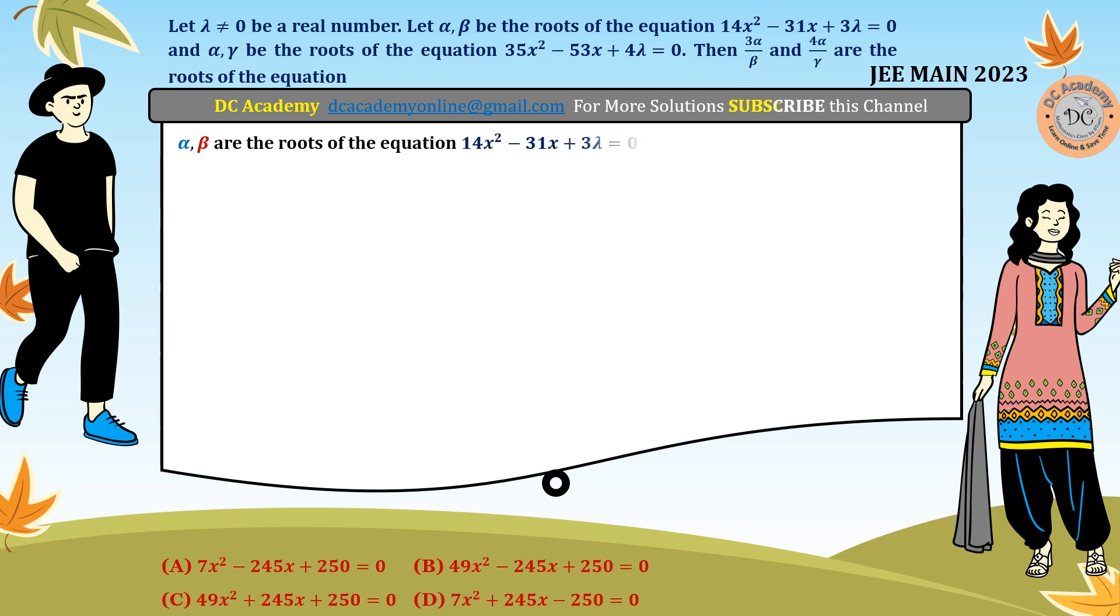Given that α, β are the roots of the equation 14x² - 31x + 3λ = 0, we know sum of roots equals -b/a and product equals c/a. Therefore, α + β = 31/14 and αβ = 3λ/14.